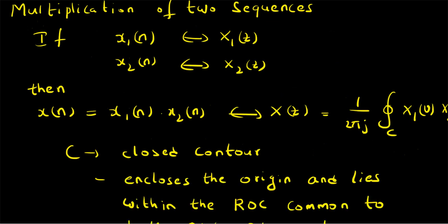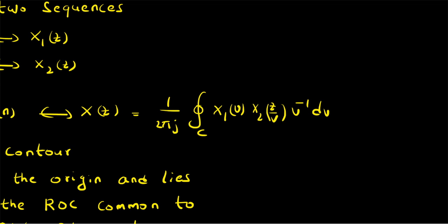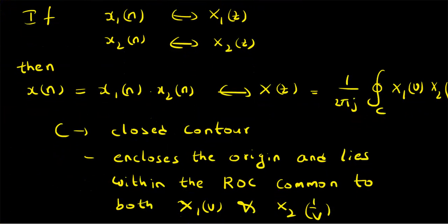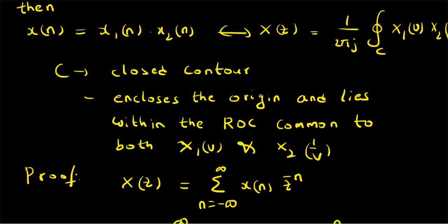To summarize: we have looked at the Z transform of multiplication of two sequences. Given x1(n) and x2(n) with corresponding Z transforms X1(z) and X2(z), the Z transform of x(n) = x1(n)·x2(n) is X(z) = (1/2πj) times the closed contour integral over C of X1(v) · X2(z/v) · v⁻¹ dv. This is like convolution in the Z domain. The contour C includes the origin and lies within the ROC common to both X1(v) and X2(1/v).